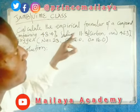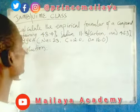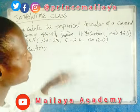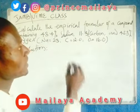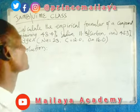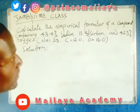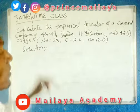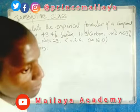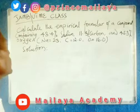Calculate the empirical formula of a compound containing 43.4% sodium, 11.3% carbon, and 45.3% oxygen. The molar mass of sodium is 23, carbon is 12, and oxygen is 16.